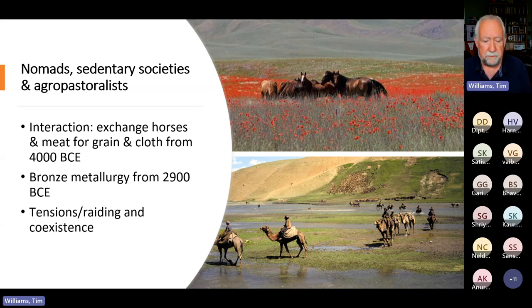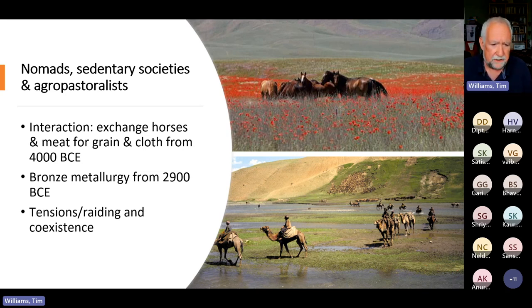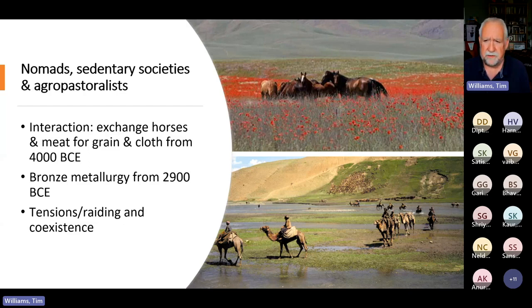So we've got the movement of bronze metallurgy — the techniques of it being used, not just the objects themselves, but the actual knowledge about how to work with that metallurgy — moving from the Caucasus across into the steppe areas from 2900 BCE at least. But again, it's not all easy. There was tension, there was raiding, there was sometimes coexistence between nomadic and sedentary societies, sometimes conflict over space and the movement of peoples. The dislocation of peoples was not always a pleasant thing — the movement of societies and peoples into new spaces, bringing them into conflict with existing occupants of that space.